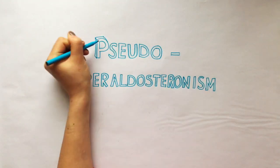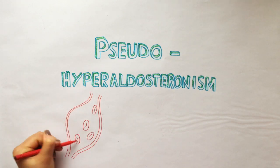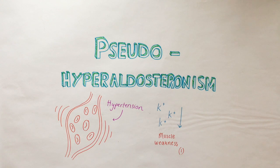Pseudo-hyperaldosteronism is a condition that clinically presents as hyperaldosteronism. Sufferers will appear with hypertension, which is elevated blood pressure, as well as muscle weakness due to potassium loss.